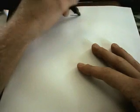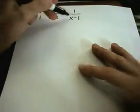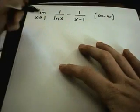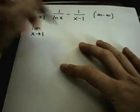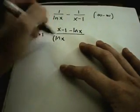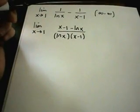Let's do one more. I've got the limit as x approaches 1 of 1 over ln of x minus 1 over x minus 1. Since ln of 1 is 0, you're getting 1 over 0 minus 1 over 0, and you can think of that as infinity minus infinity. A lot of times if you have fractions floating around, a good idea is to simply get common denominators. So I'm going to have x minus 1 minus ln of x in the numerator, and ln of x times x minus 1 in the denominator after getting common denominators.